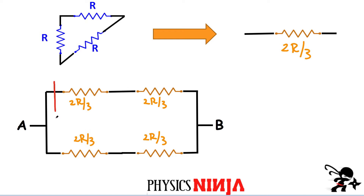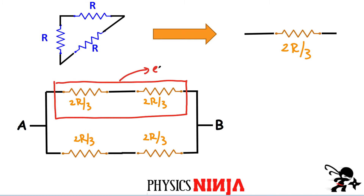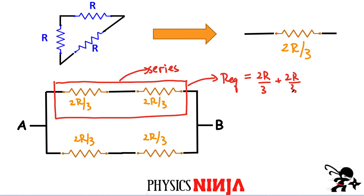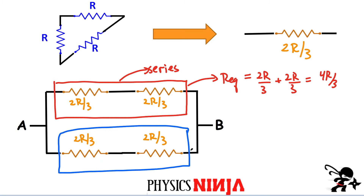Now all we have to do is look at this simplified network. In the top portion, both resistors are simply in series with each other. The equivalent resistance inside my red box is 2R over three plus 2R over three, which gives four R over three. And by the same reasoning, the lower segment also gives an R equivalent of four R over three.